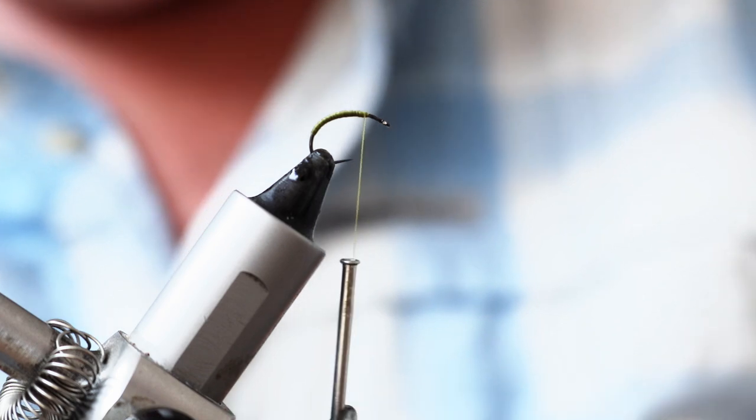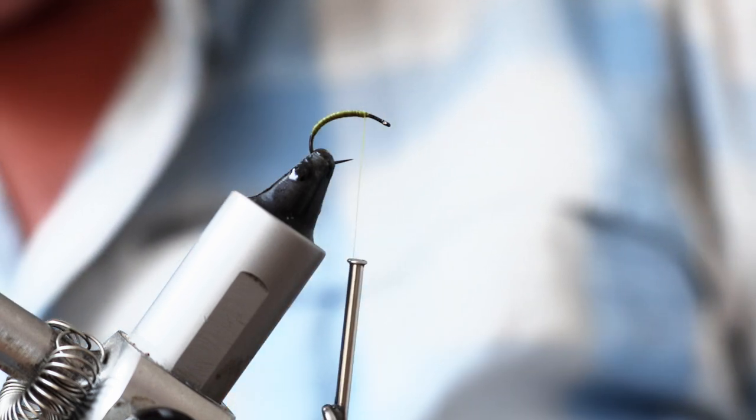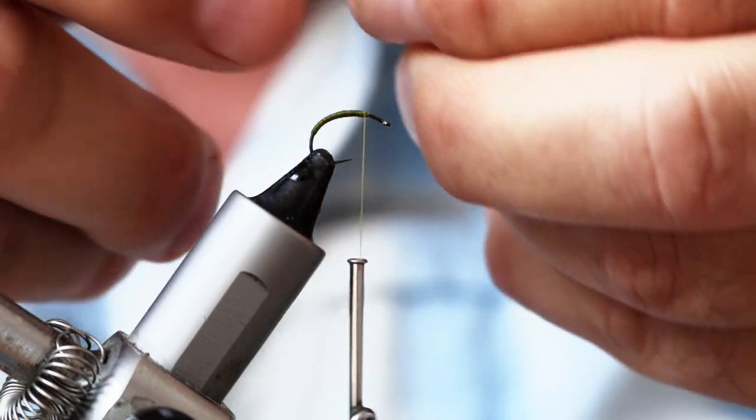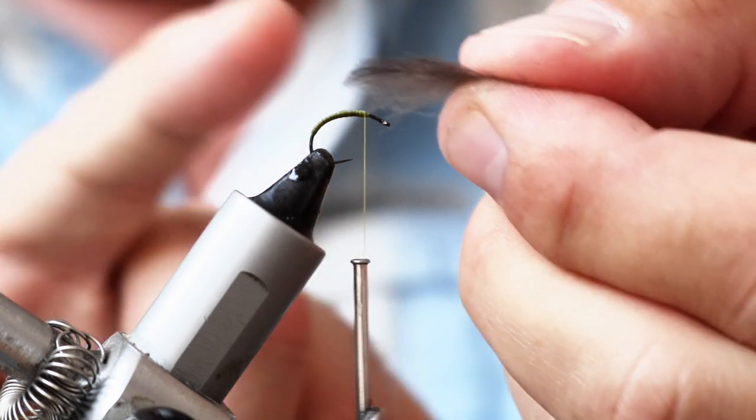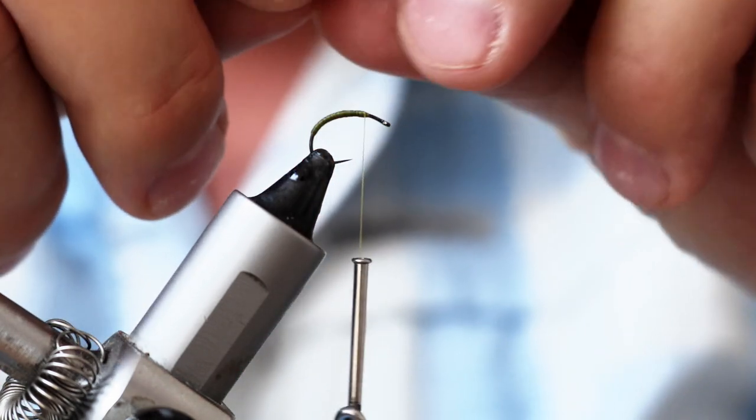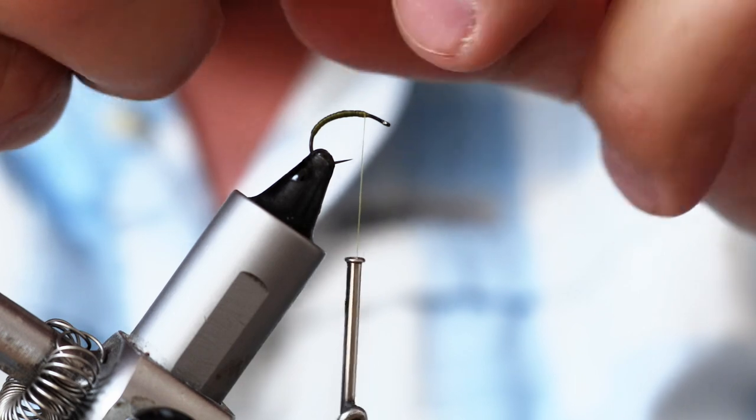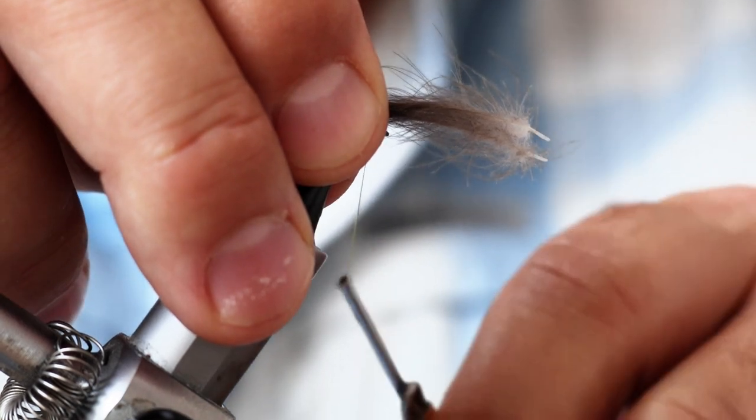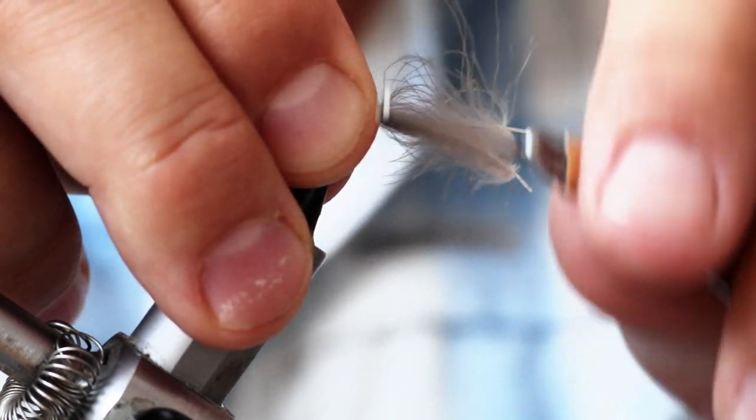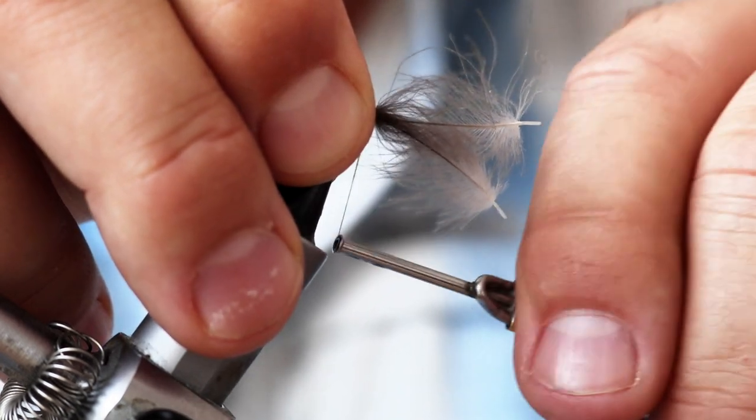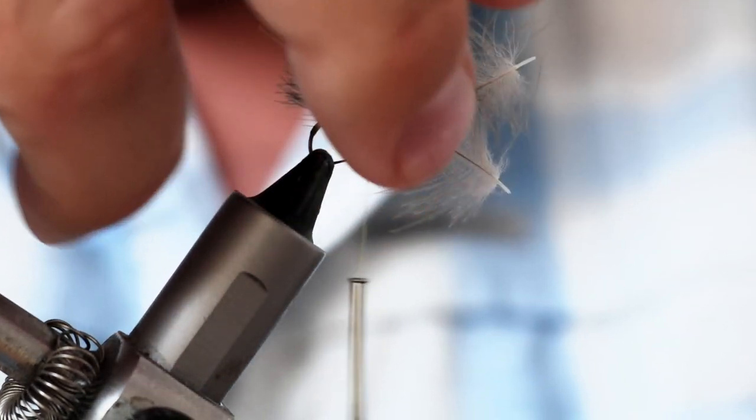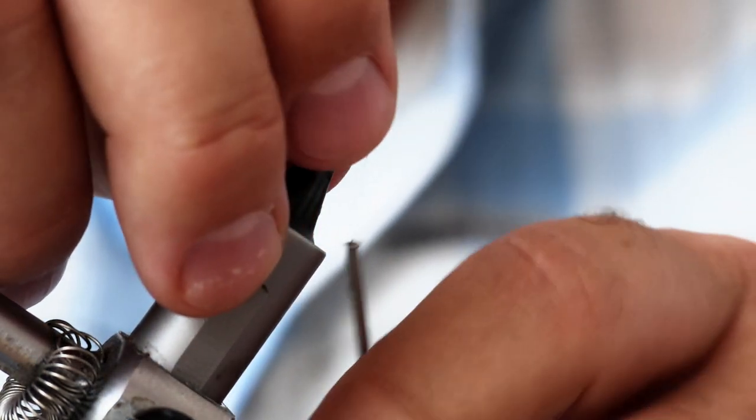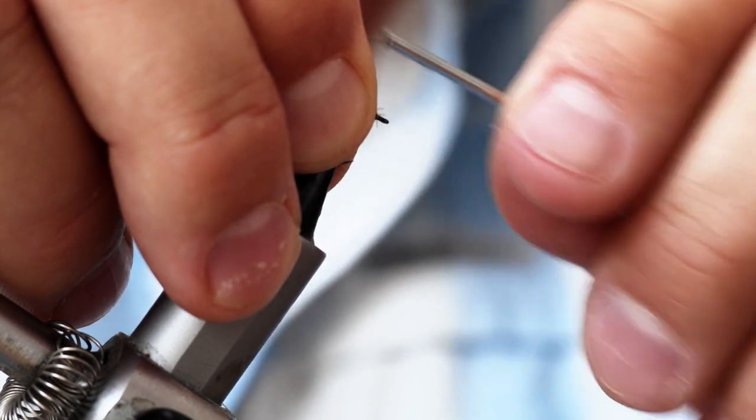Again, in this case I'm going to grab two CDC feathers once again. Lining up the tips as we go. Again, flip them over so that they match the curve of the hook. Measure them up. Perhaps not quite as far over the back as in the previous tie. Pinch and loop. And on this occasion, rather than using the CDC to provide the dubbing for the head, I'm just going to grab a little bit of grey squirrel.